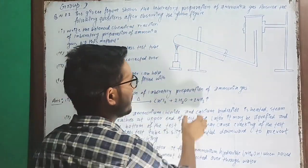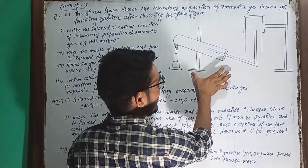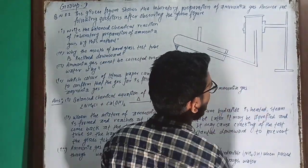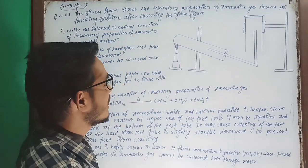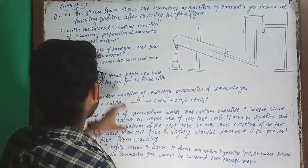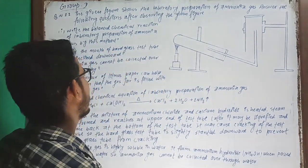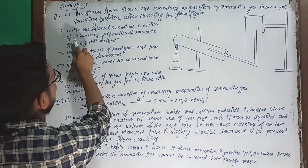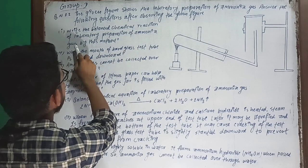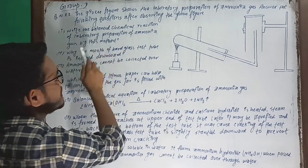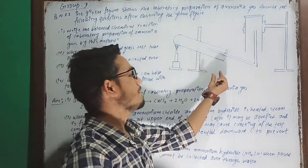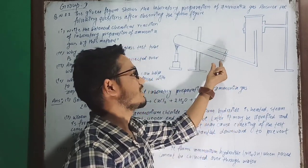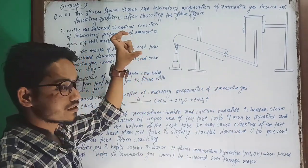The given figure here shows the laboratory preparation of ammonia gas by this method. In this method, in laboratory preparation, what is the balanced chemical equation?